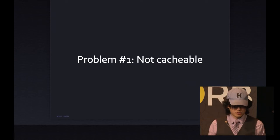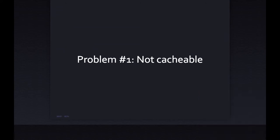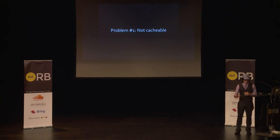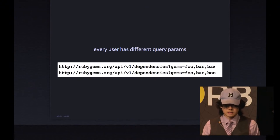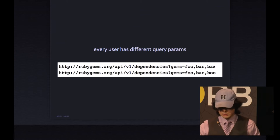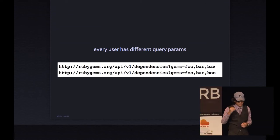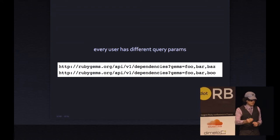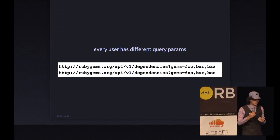But when we released this, we found it wasn't problem-free. The first problem is that the API endpoint was not cacheable at all. Every single gem file has different gems, and since the query varies, you'd need enormous cache storage just to save the computation. In a simple example, if you only change one gem (Baz to Boo), you have to construct that whole result set again — you can't share between those two queries even though only one gem is different.